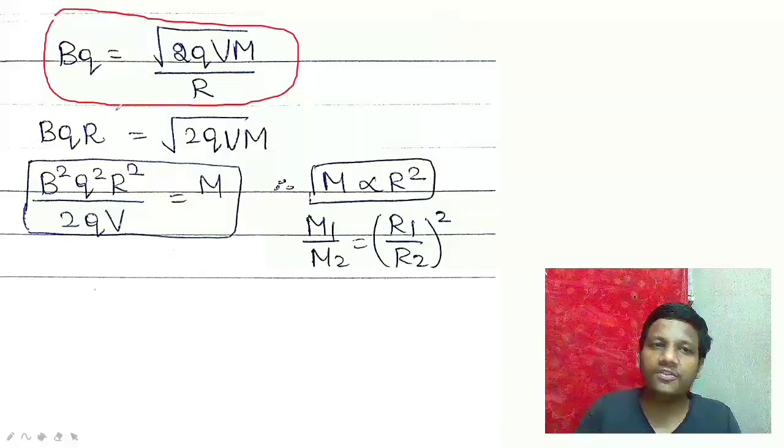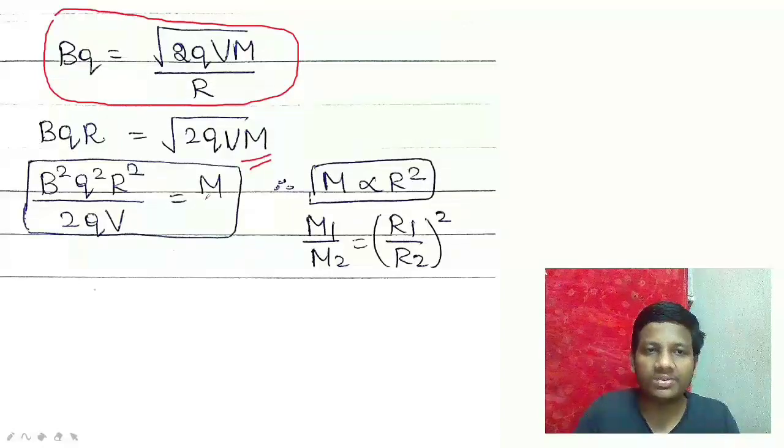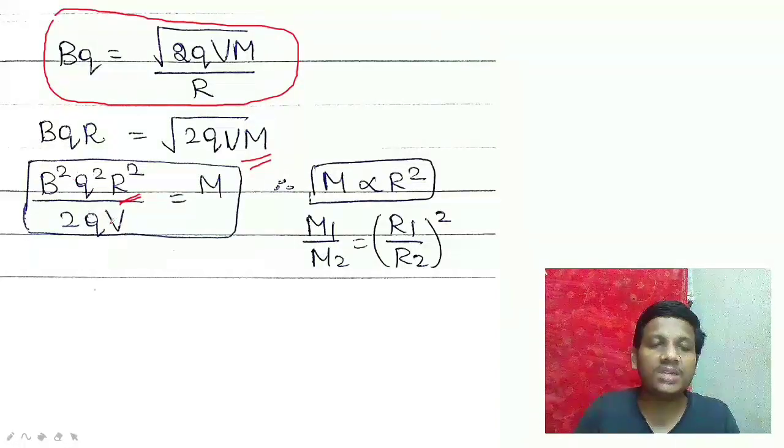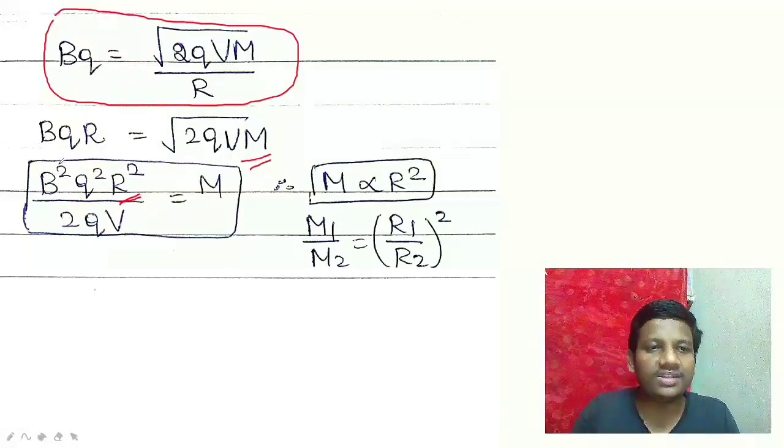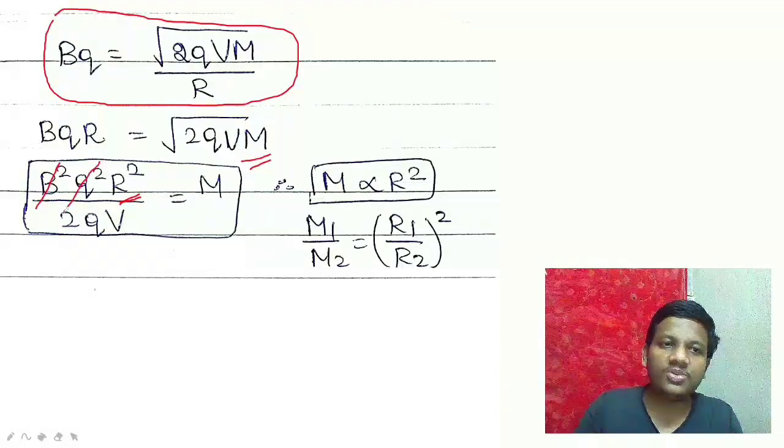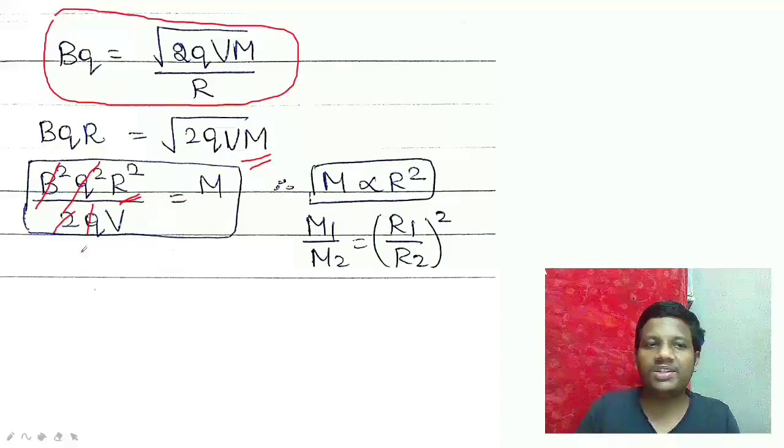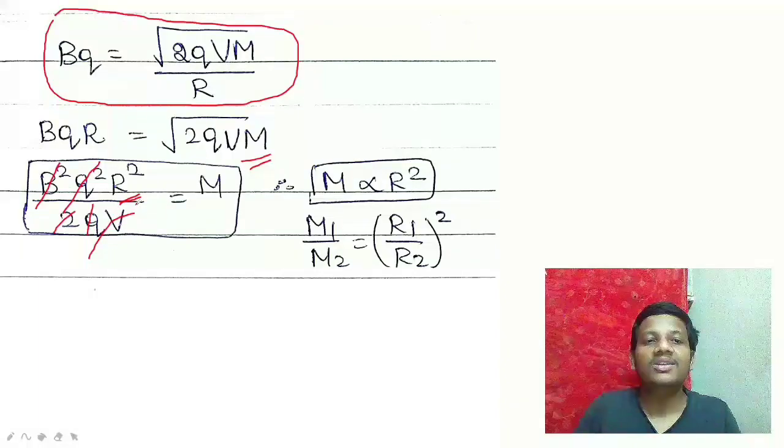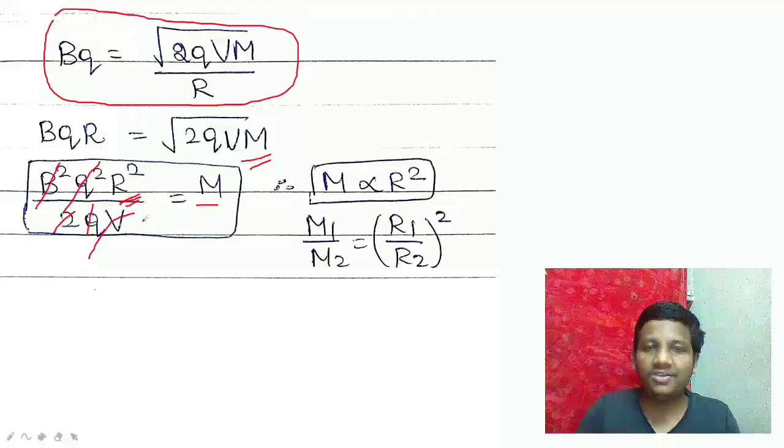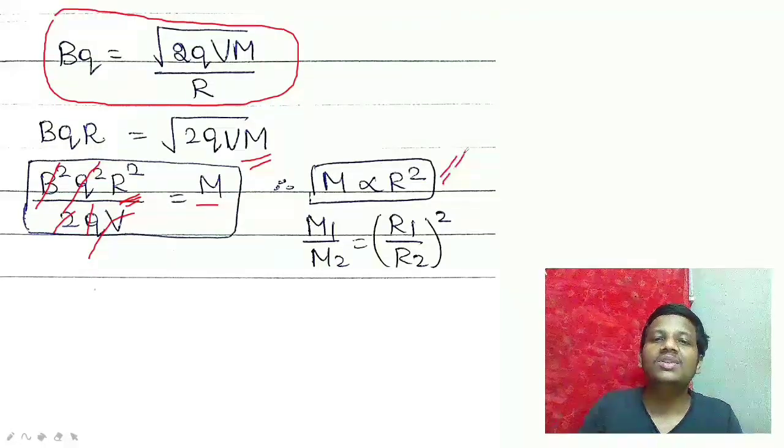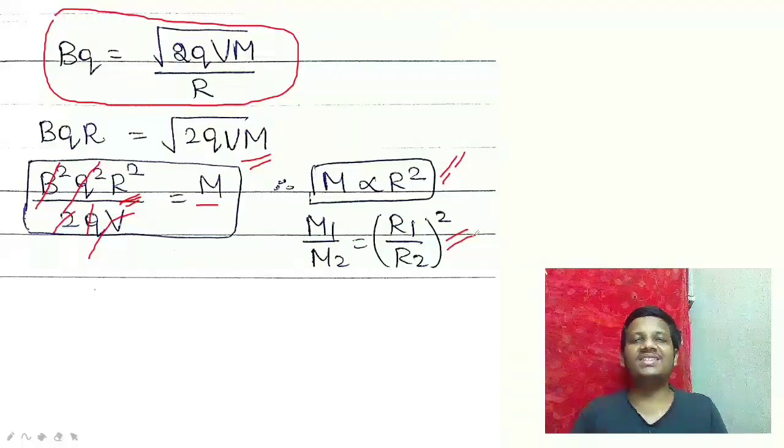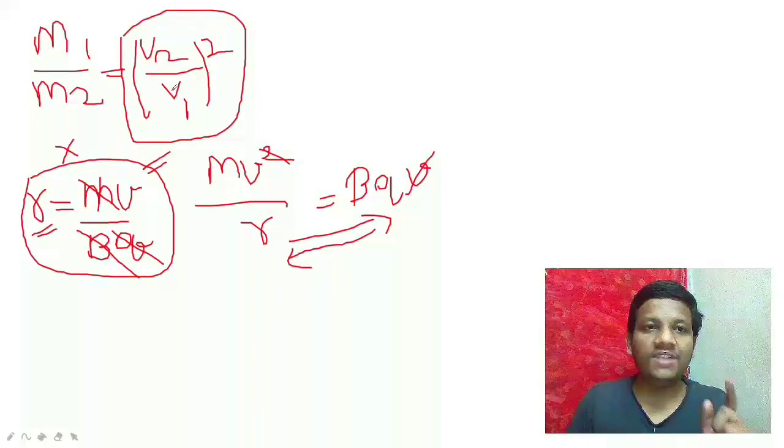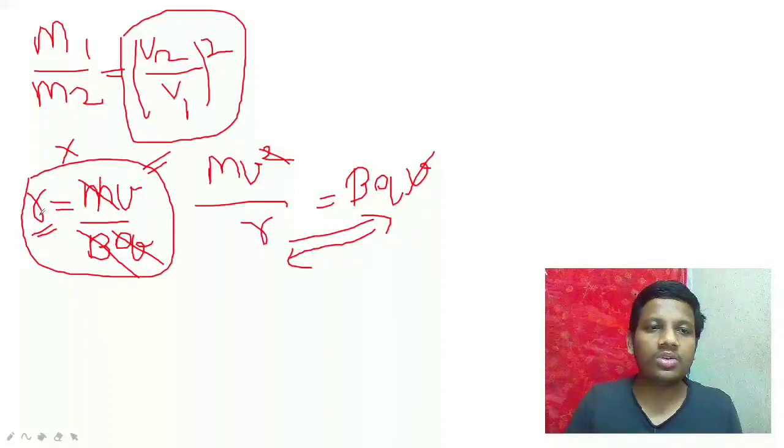Now rearranging every formula in terms of mass, we check which parameters are common. Magnetic field B is common to both particles, charges are equal, 2 is a constant, and the potential difference is also common. These are constants for both particles. So straight away, M is directly proportional to R squared. Therefore, M1 by M2 equals R1 by R2 the whole squared.